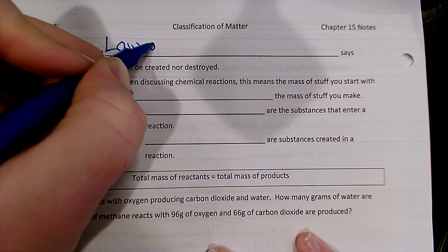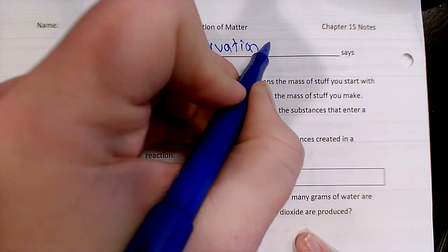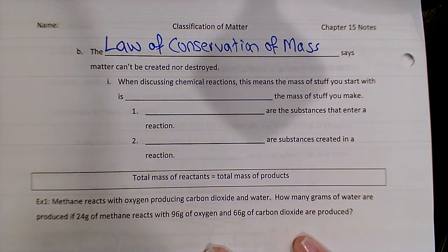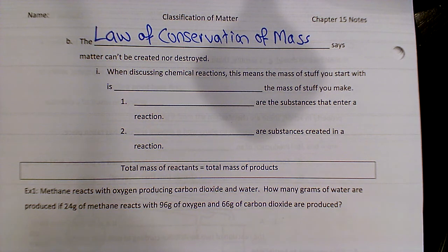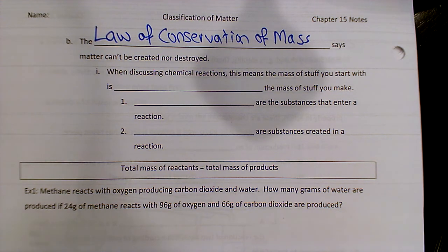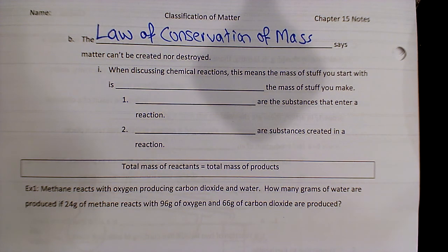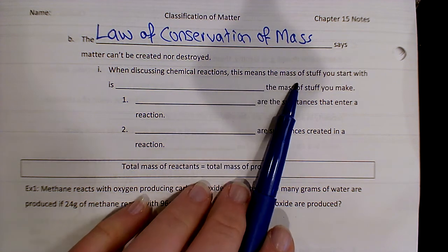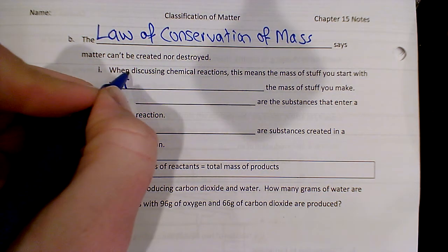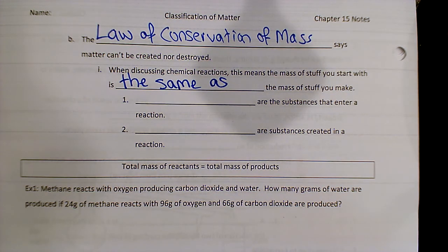So we have this idea called the law of conservation of mass, and we've had a few laws of conservation already this year, and they all kind of have the same general idea, right? Something can't be created or destroyed. In this case, it's matter. So the amount of matter that you start with before a chemical reaction happens is the same amount of matter you have when you're done. When discussing chemical reactions, this means the mass of stuff you start with is the same as the mass of stuff you make.